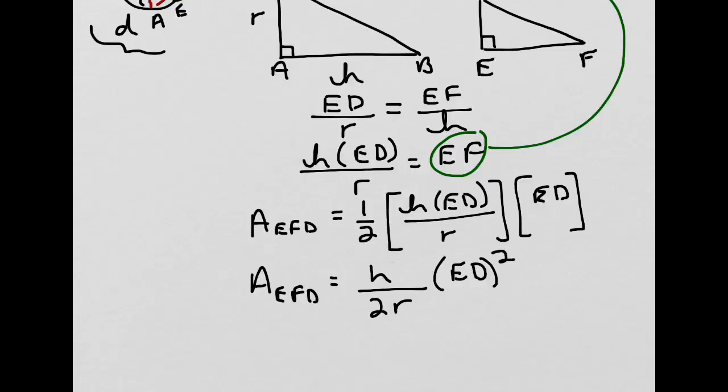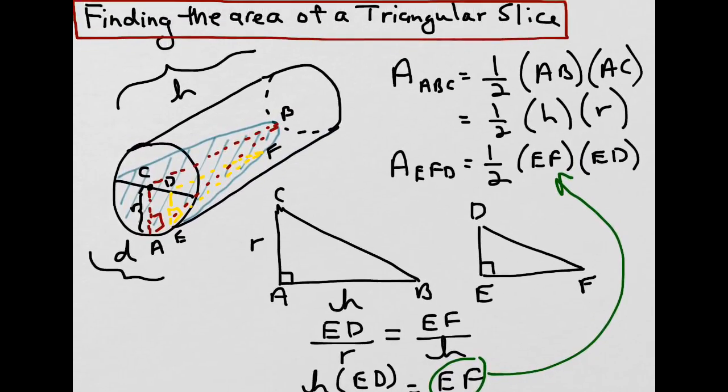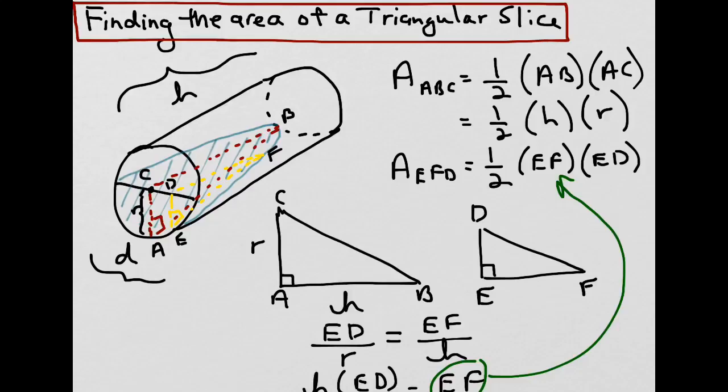So what we have in the end is a formula for the area of the triangular slice in terms of the constants H and R and the one variable ED. And we can see that this area formula would be similar for any triangular slice that we draw to the left or right of C.